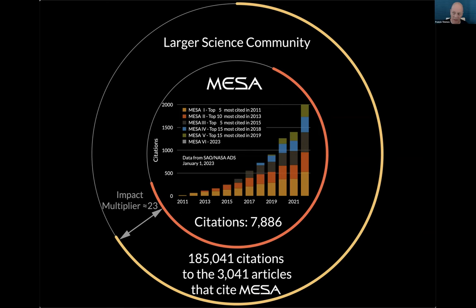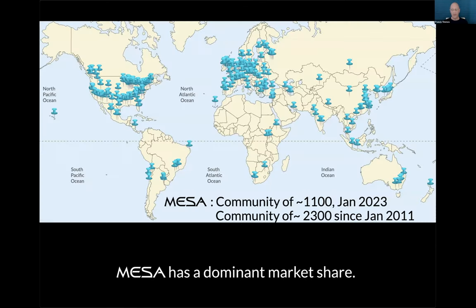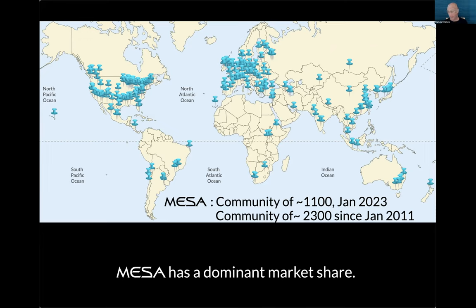So these are very good metrics. Who is writing all these papers? This community is spread globally. Currently MESA has a community of about 1,100 active registered users on the MESA user list as of January 2023. Every year there's about a 10% turnover as people come and go. If you sum it all up since MESA users was started in 2011, it's about a community of about 2,300. MESA by far has the dominant market share among stellar evolution instruments across the globe.